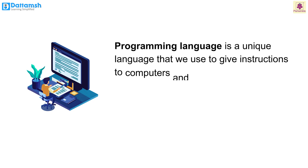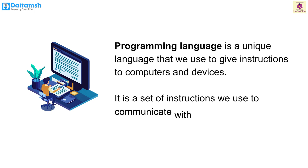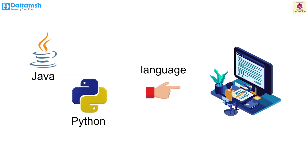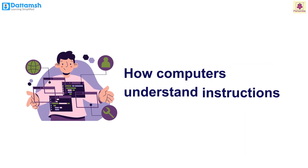Let's begin with: what is a programming language? A programming language is a unique language that we use to give instructions to computers and devices. It is a set of instructions we use to communicate with computers. Just like we use English or Hindi to talk to other people, programmers use languages like Python or Java to give commands to computers and devices.